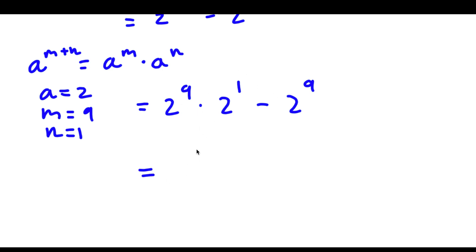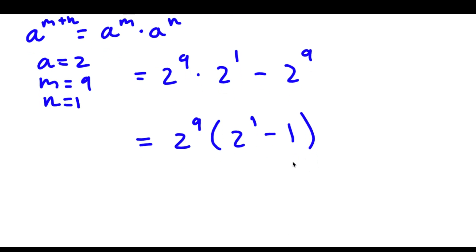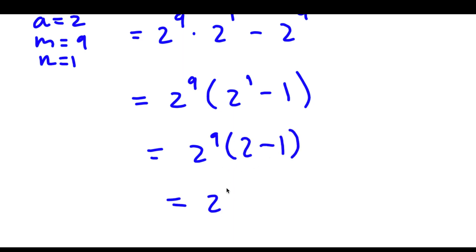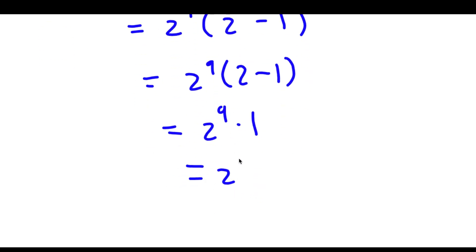Now, because both of these terms have 2 to the power of 9 in them, I can simply factor out 2 to the power of 9. So now I have 2 to the power of 9 times open bracket 2 to the power of 1 minus 1 close bracket. 2 to the power of 1 is the same thing as 2, so I have 2 to the power of 9 times 2 minus 1. 2 minus 1 is 1, so I have 2 to the power of 9 times 1, which is equal to 2 to the power of 9.